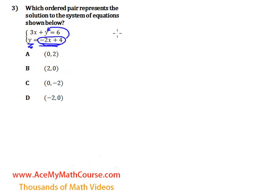So what is that going to look like? We have 3x plus y equals 6, and y is negative 2x plus 4.